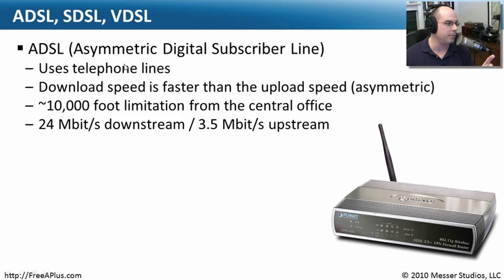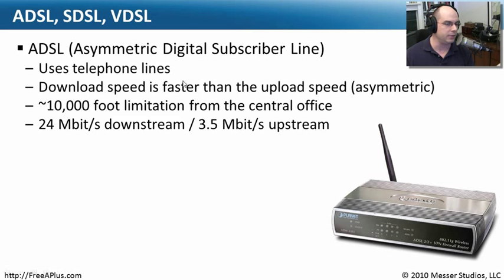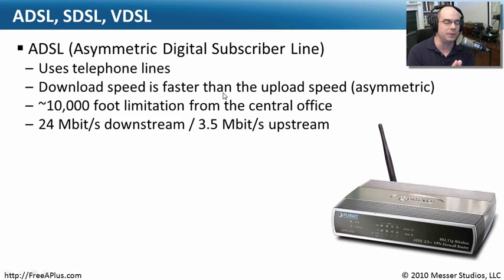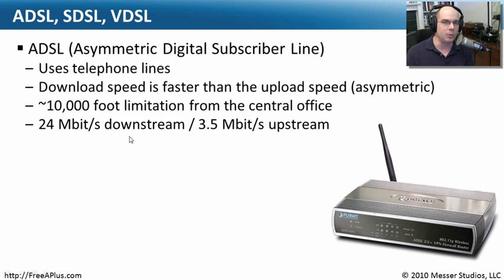ADSL is probably the most common DSL configuration you will see in the United States and other places in the world. Since it's using regular telephone lines, all of these lines are going back to a central office. Phone lines don't have a lot of shielding, so when you get a bunch of them together, you get crosstalk between them, making it more difficult for the signal to get through. That's why you can receive a lot of downstream traffic, but upstream is more complicated because everybody is going back to a central point.